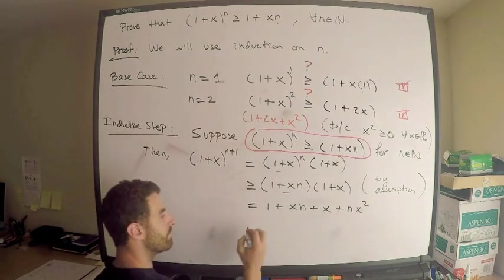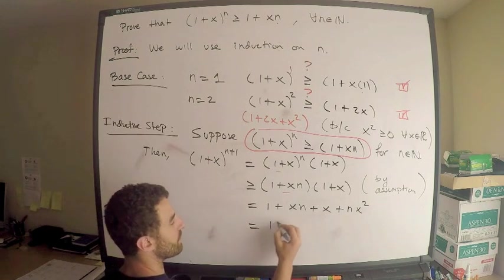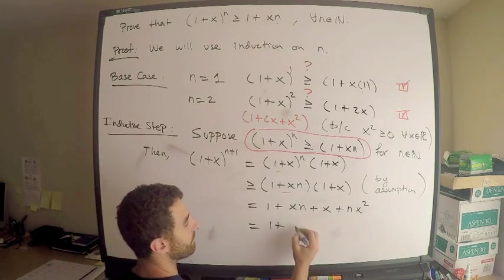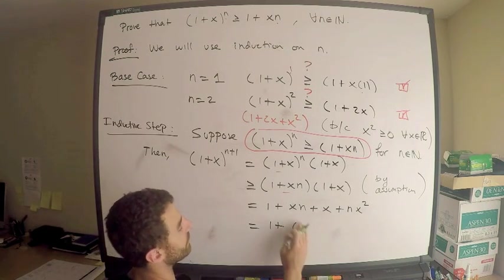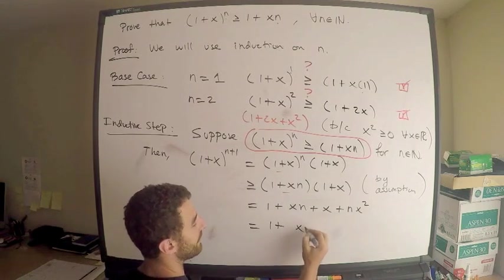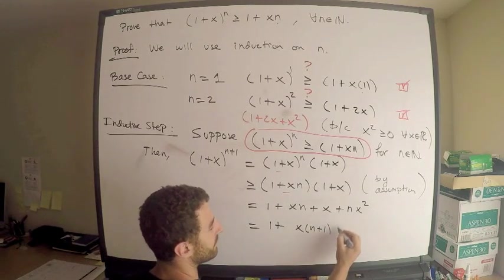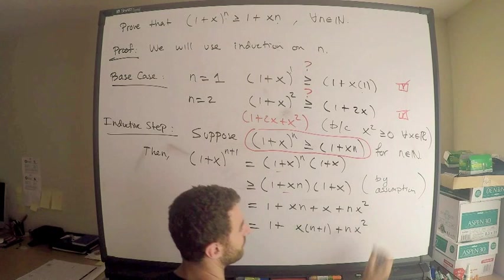Now, one more, two more steps. This is equal to 1 plus, let's write it this way. This is equal to x times n plus 1 plus nx squared.